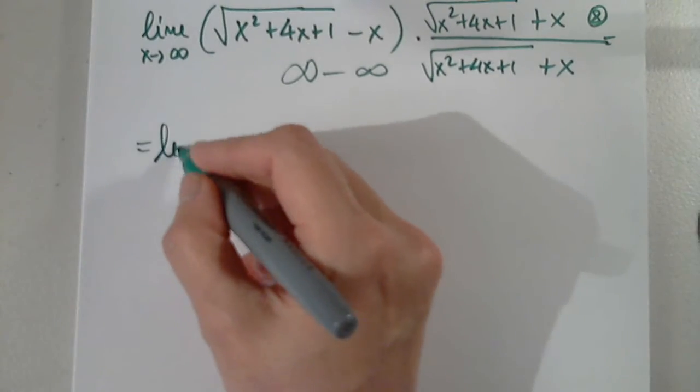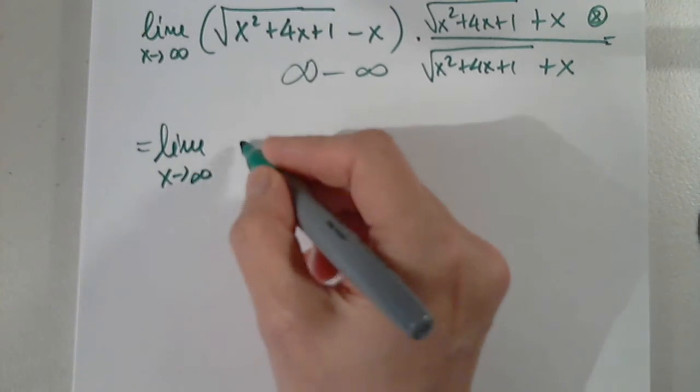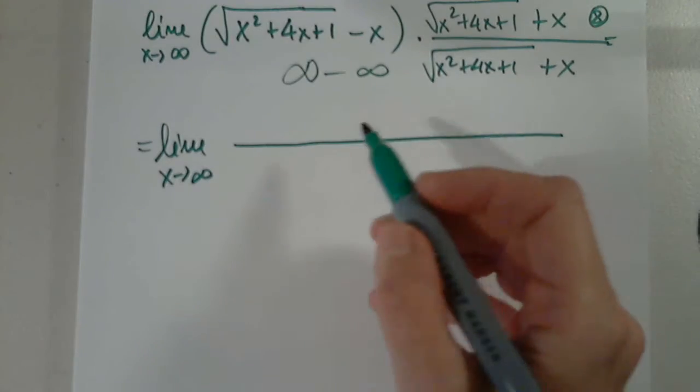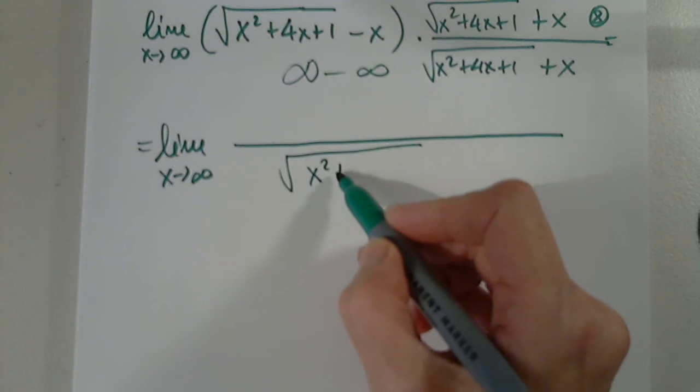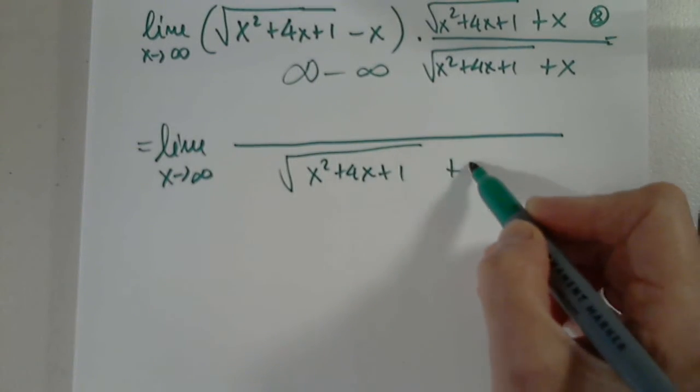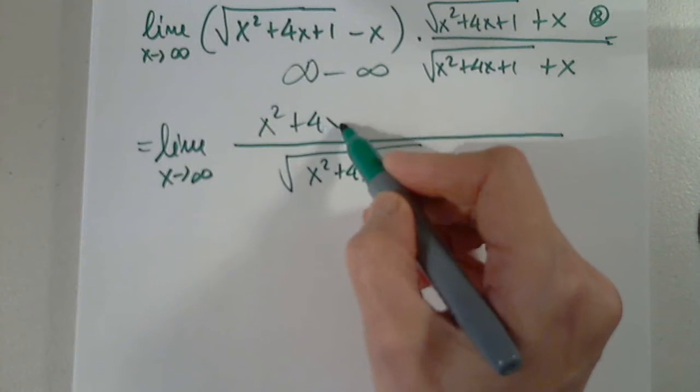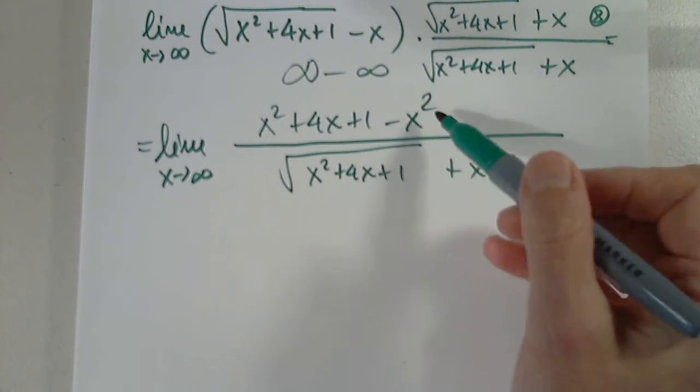Then we have limit as X approaches infinity. The denominator is the square root of X squared plus 4X plus 1 plus X. And the numerator is X squared plus 4X plus 1 minus X squared.